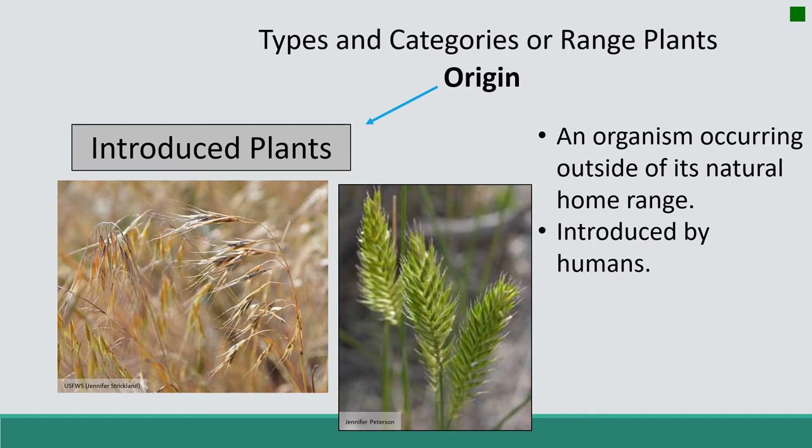Historically we brought plants over from Eurasia that established quickly so we could reduce erosion. Plants with high forage value have been introduced, and we can also introduce them accidentally. Introduction of exotic plants continues today and is increasing due to the large and ever-expanding human population.